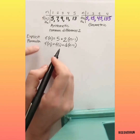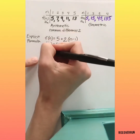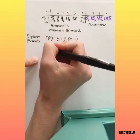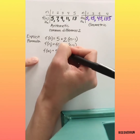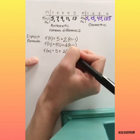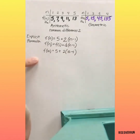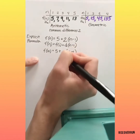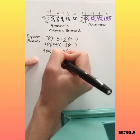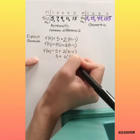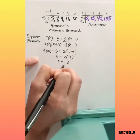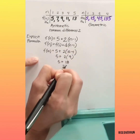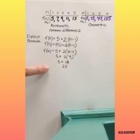Now let's try to use this if we want to find the 10th term. f of 10 equals 5 plus 2 times 10 minus 1. 10 minus 1 is 9. 2 times 9 is 18. Add that to 5 and we'll get 23. That's the 10th term.